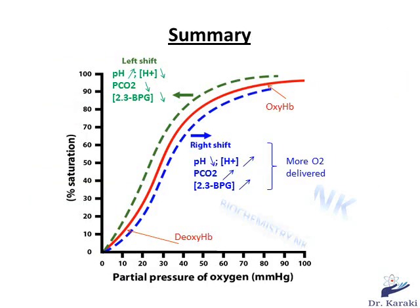To summarize, in this video we have talked about the heterotropic allosteric effectors of hemoglobin: H+, CO2, and BPG. All of them decrease the affinity of hemoglobin for oxygen. From a physiological perspective, these negative effectors are beneficial since they increase the supply of oxygen to tissues. Conditions that shift the hemoglobin curve to the right include acidosis due to high H+, high partial pressure of CO2, and high concentration of BPG. Alkalosis, low CO2, and low BPG will shift the curve to the left.